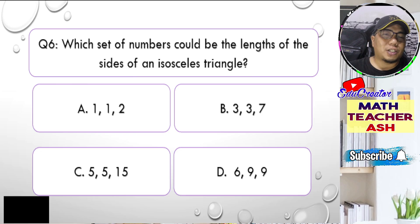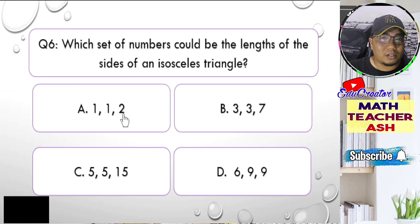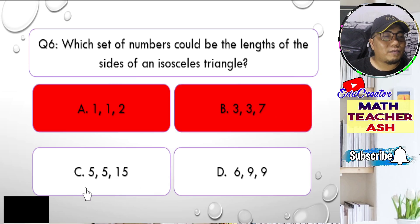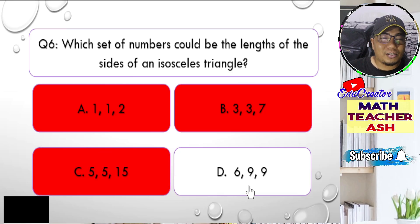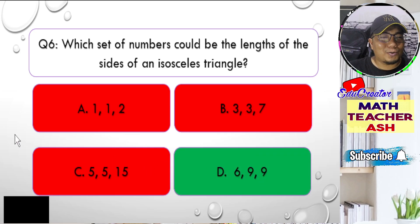Let's apply what we learned: the sum of any two sides should always be greater than the third side. 1 + 1 = 2, equal to the third side — A is not realistic. 3 + 3 = 6, less than 7 — B is unrealistic. 5 + 5 = 10, less than 15 — C is wrong. For D: 6 + 9 = 15, which is bigger than 9; and the other combinations also work. So the correct answer is letter D.